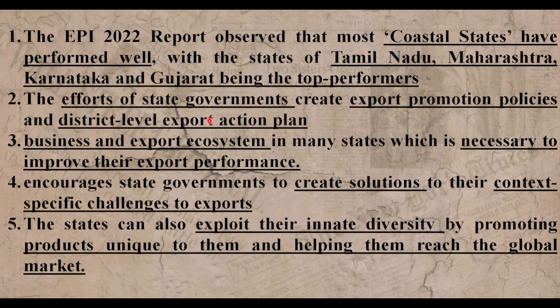Looking at the report, the top performing states are coastal states: Tamil Nadu, Maharashtra, Karnataka, and Gujarat. Landlocked states like Telangana, which do not have a port, are at a disadvantage for exports. Coastal states naturally have an advantage because they have access to export infrastructure like ports.